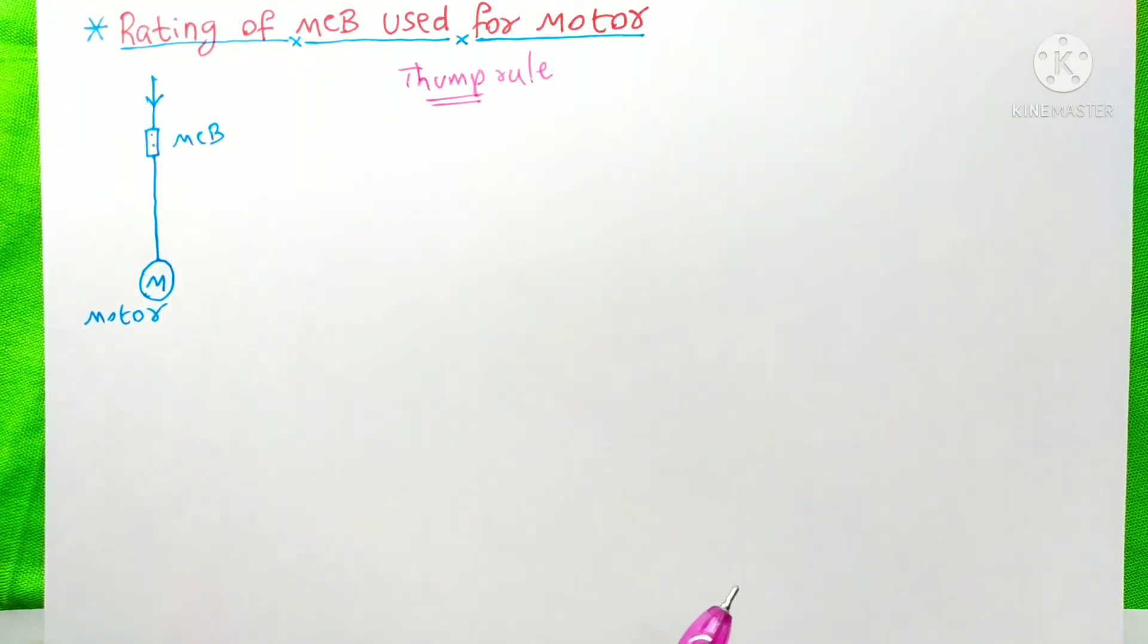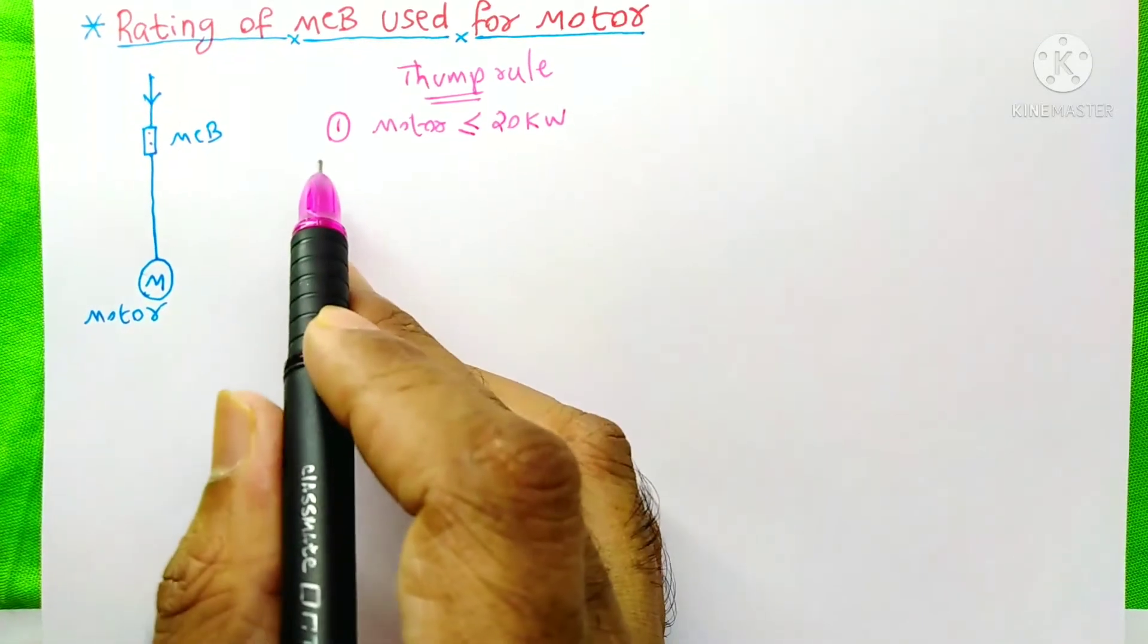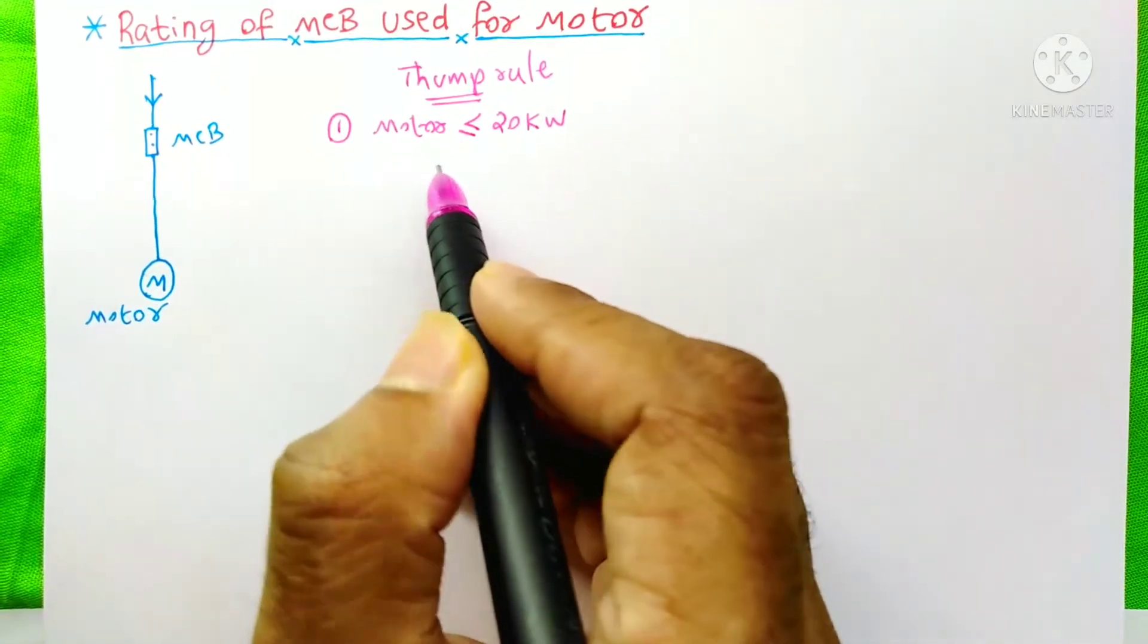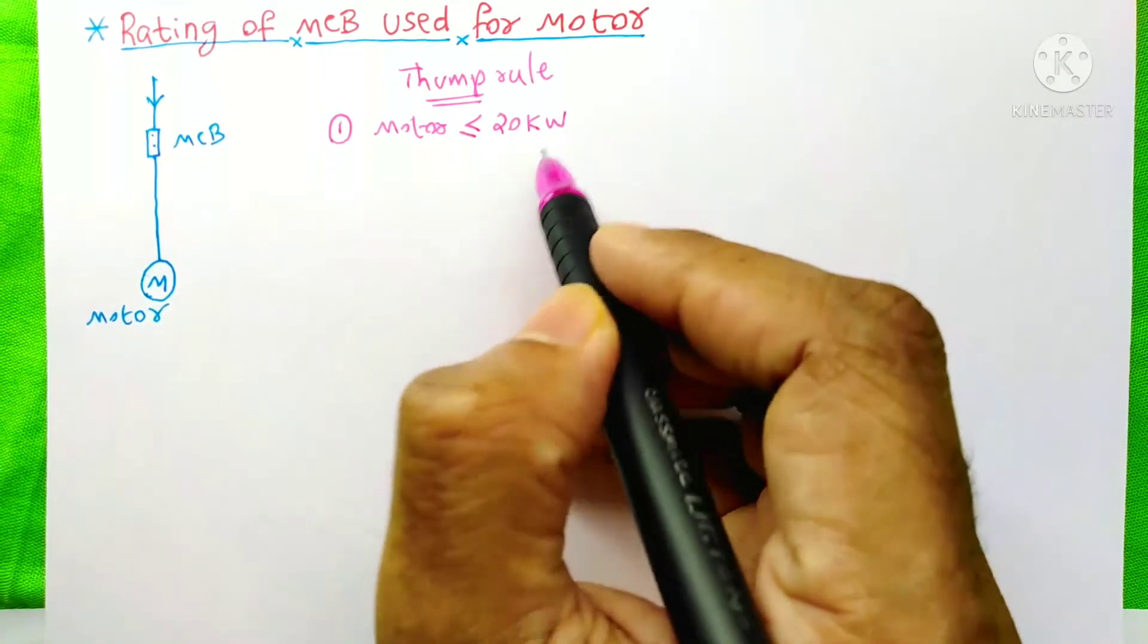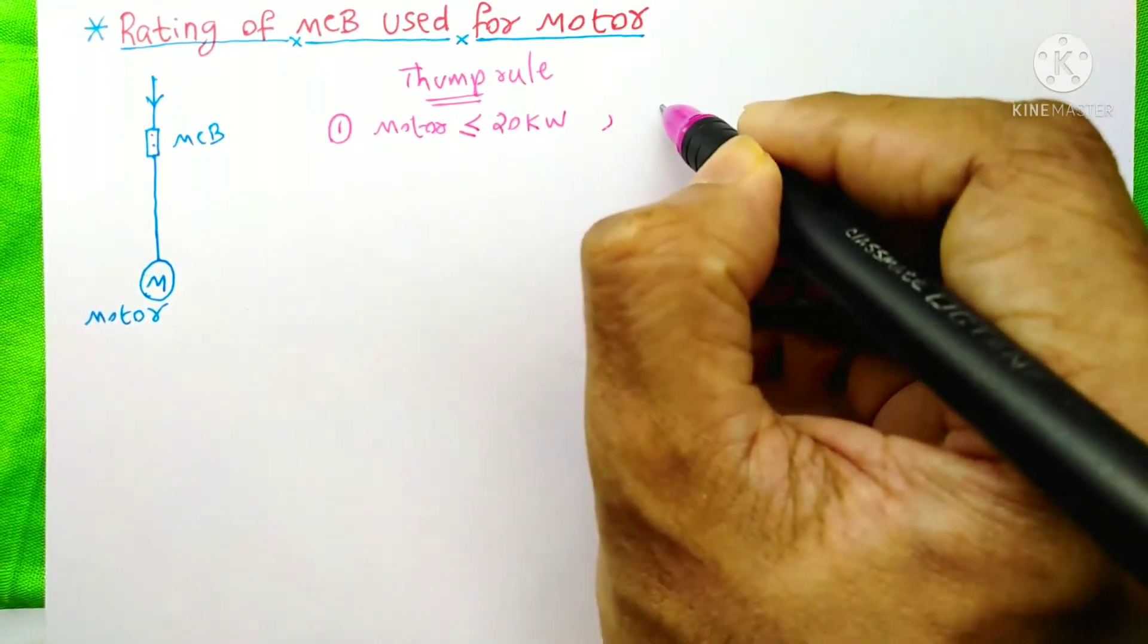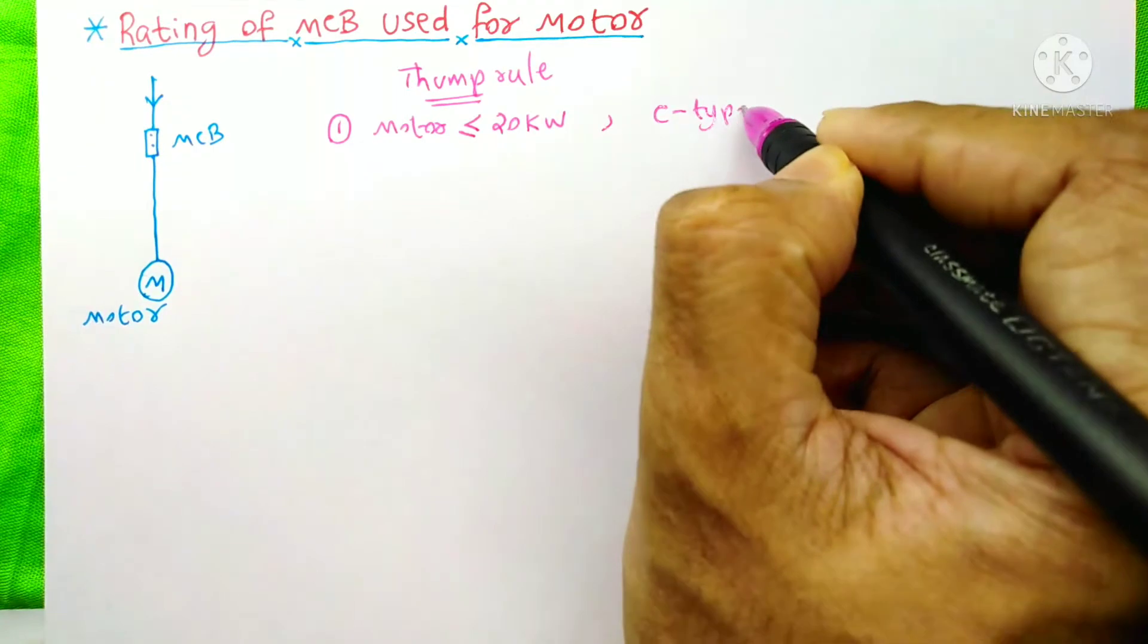I am an electrical engineer. To learn about this, please don't skip this video till its last. Thumb rule number 1 is if your motor's capacity is less than or equal to 20kW, then you must choose the C-type MCB.